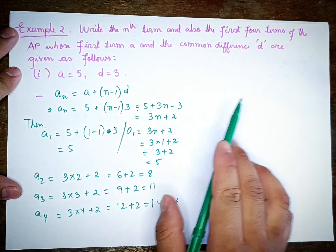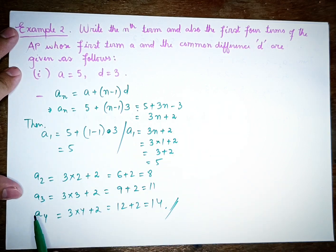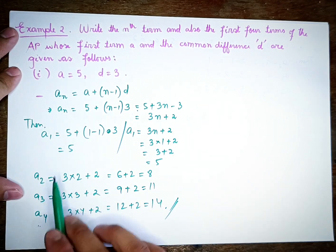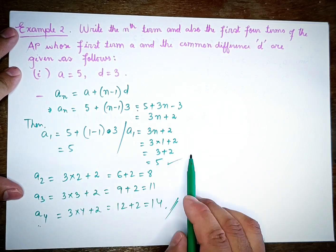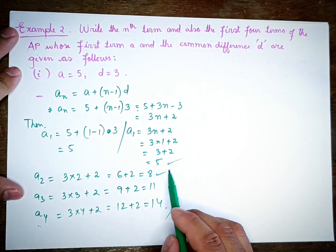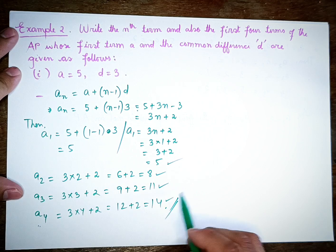So the first four terms of the AP are: 2, 5, 8, 11, 14.